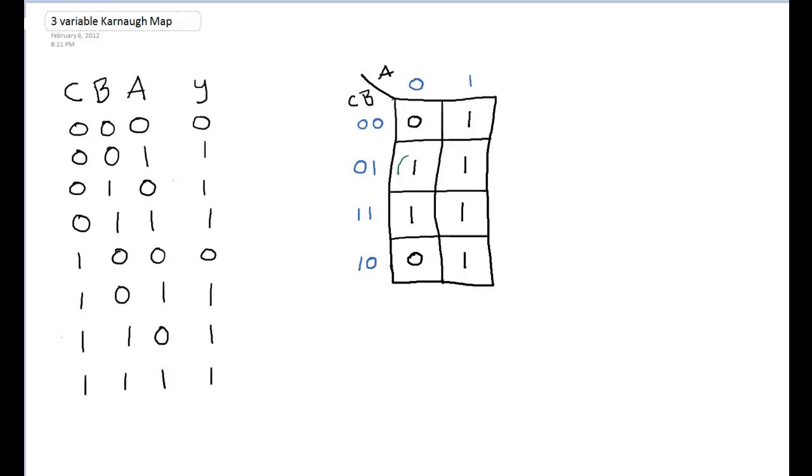So we could circle a single 1, that would be legal. We can circle 2 1s, that would be legal. We can circle 4, and in this particular map we could circle 4 this way, or we could circle 4 this way. Now you could circle 8 as well, but we don't have 8 1s in this Karnaugh map, so we can't do that.